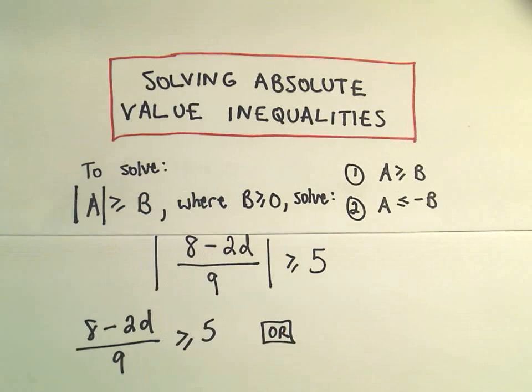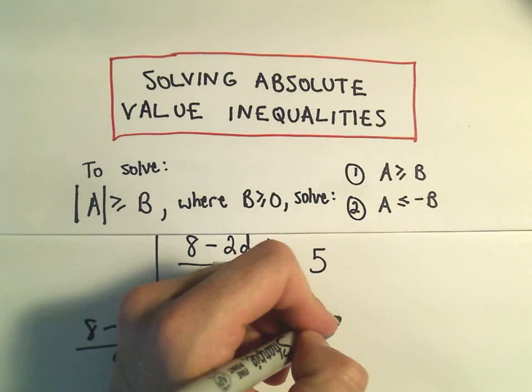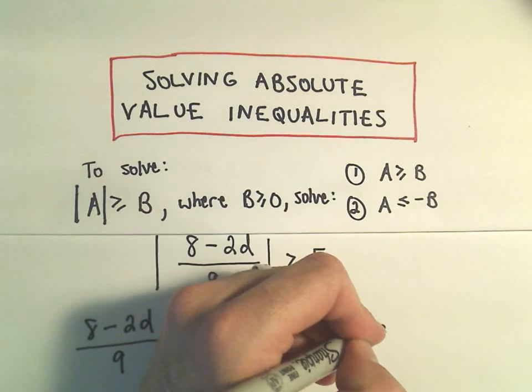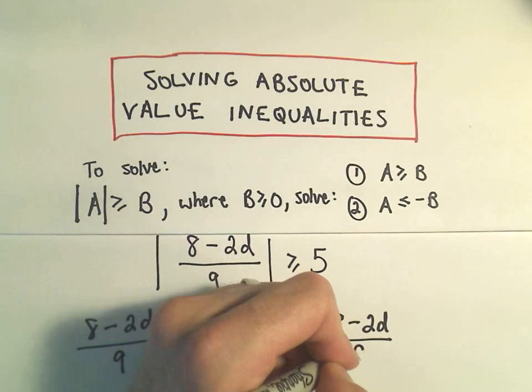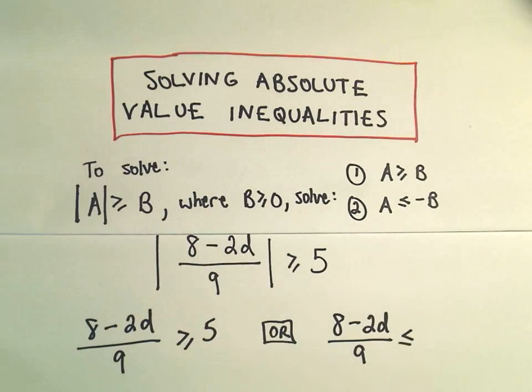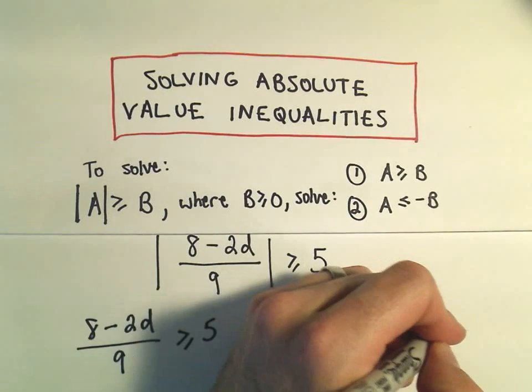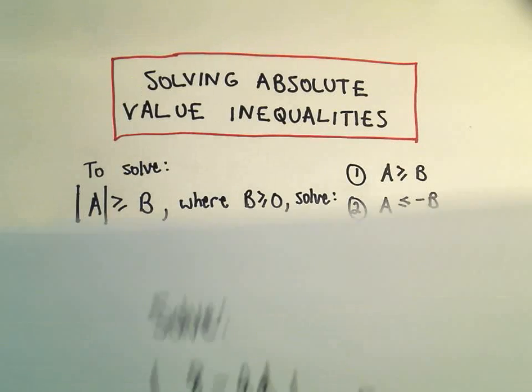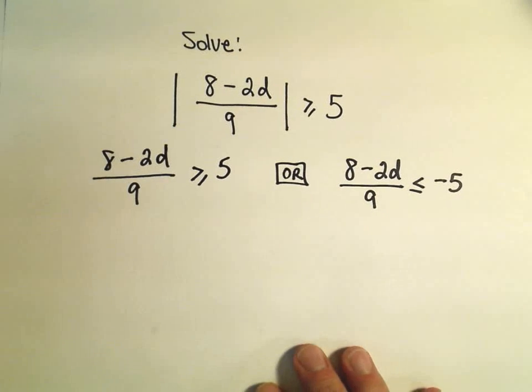Or it's going to turn out the other solution will be when the quantity inside 8 minus 2d over 9 is less than or equal to the negative of that value. And that's going to give us our two inequalities that we have to solve.